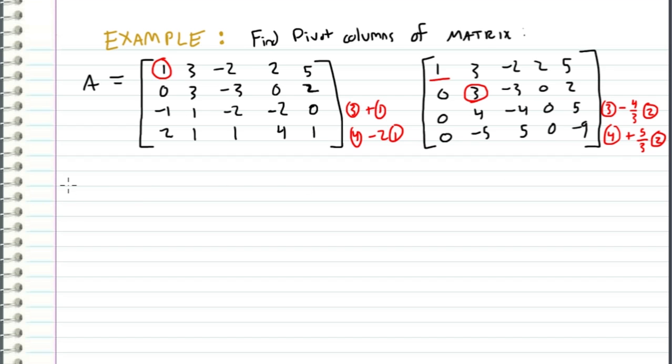So let's go ahead and do this operation, and what we get is one, three, negative two, two, five. First row stays the same. Second row stays the same.